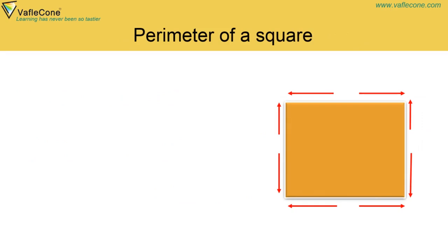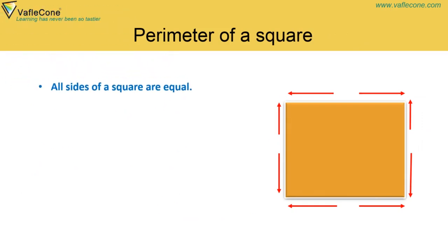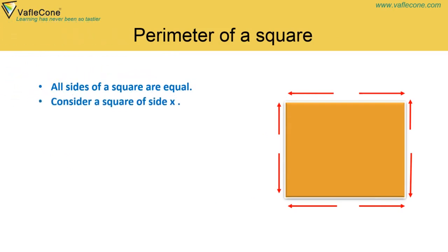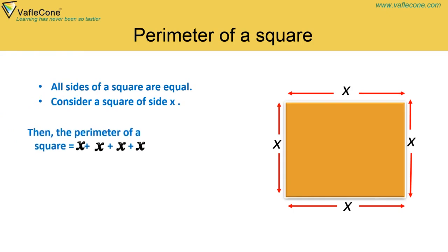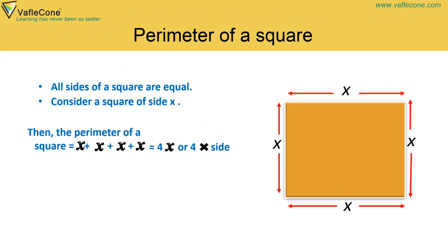Perimeter of a square: All sides of a square are equal. Consider a square of side x. Then the perimeter of a square is equal to x plus x plus x plus x, which equals 4x, or 4 into side. Thus the perimeter of a square is equal to 4 times its side.